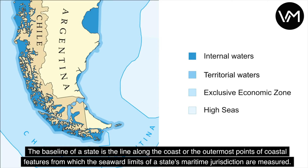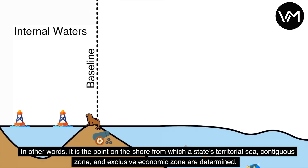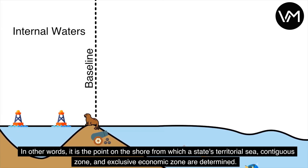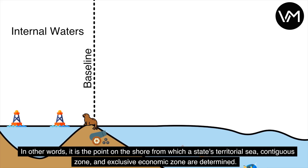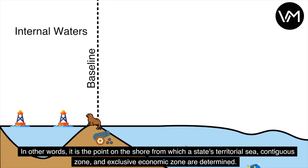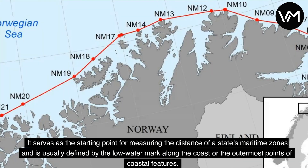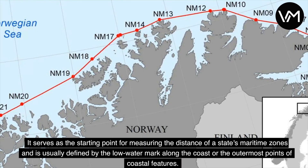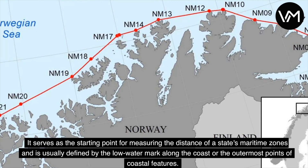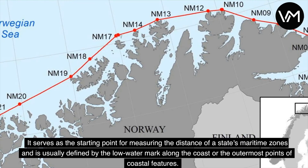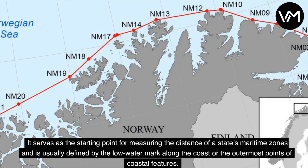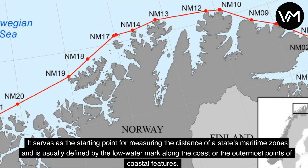The baseline of a state is the line along the coast, or the outermost points of the coastal features, from which the seaward limits of a state's maritime jurisdiction are measured. In other words, it is the point on shore from which a state's territorial sea, contiguous zone, and exclusive economic zone are measured, and is usually defined by the low water mark along the coast or the outermost point of the coastal features.